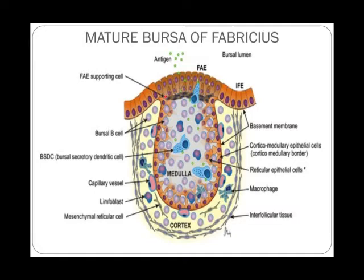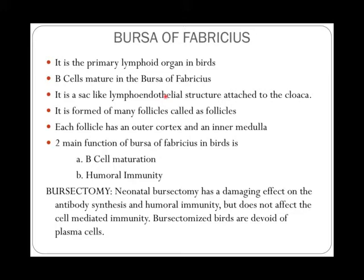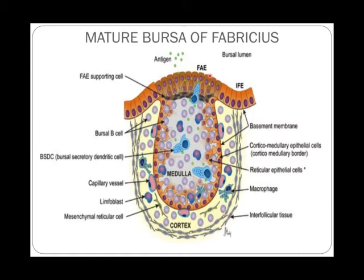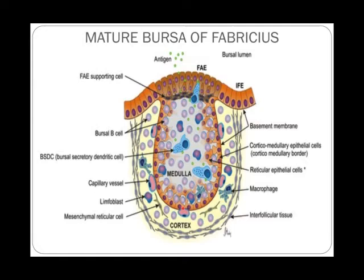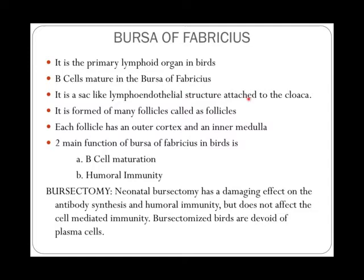This is the structure of a Bursa of Fabricius — a single lobule. It is the primary lymphoid organ where B cells mature. They are produced in the bone marrow but they mature in the Bursa of Fabricius. It is a sac-like lymphoendothelial structure attached to the cloaca — sac-like, made up of endothelial cells as well as lymphatic cells, hence called a lymphoendothelial structure.